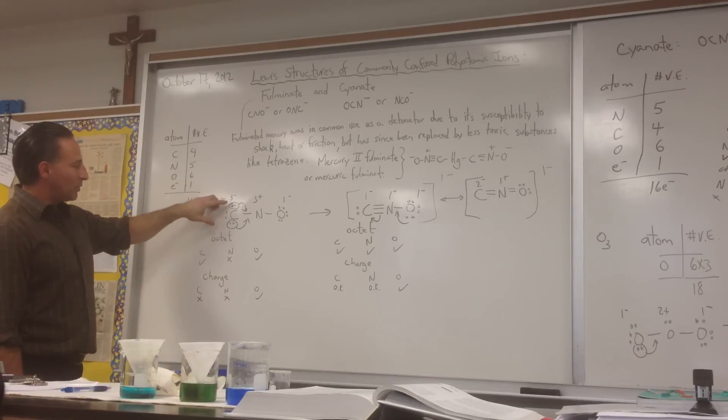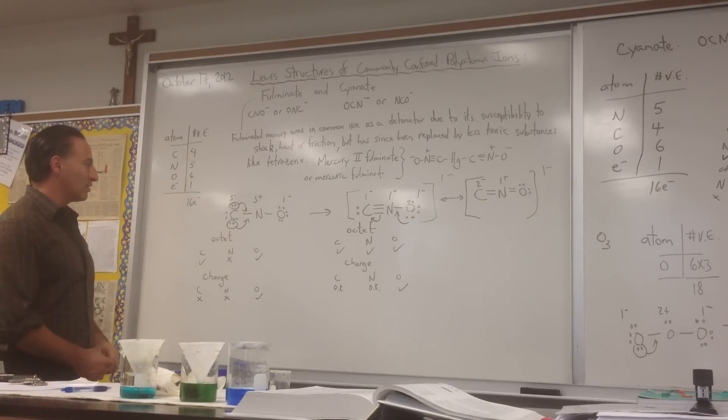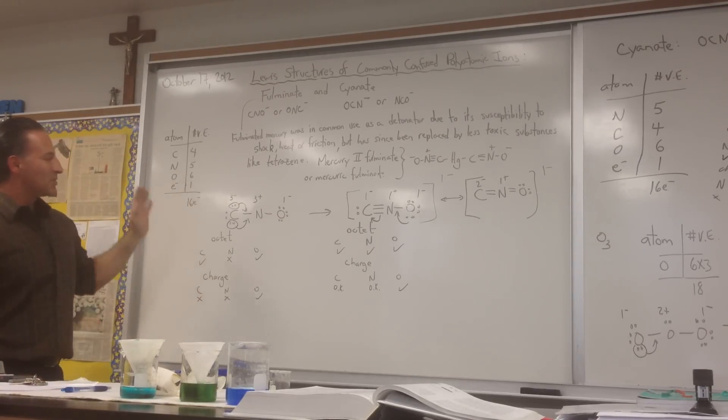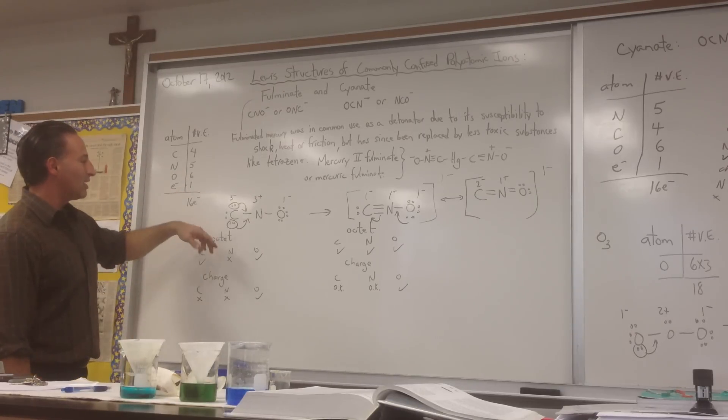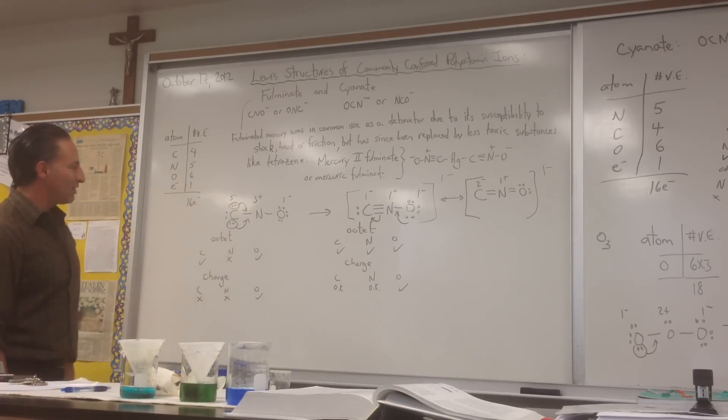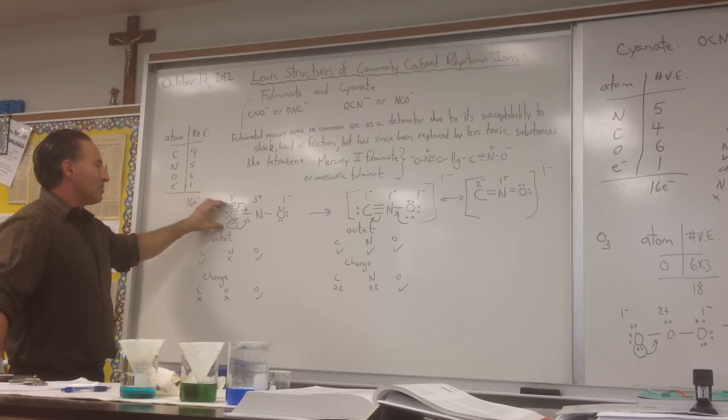If we were to look for formal charges, we recall that lone pairs count for 2, bonding pairs count for 1 when it comes to charge considerations. For carbon, we're going to see that it has 2, 4, 6, plus 1 more for the bonding pair, a total of 7 electrons in its possession, but it only wants to possess 4, so it's going to have a negative 3 charge in this drawing.